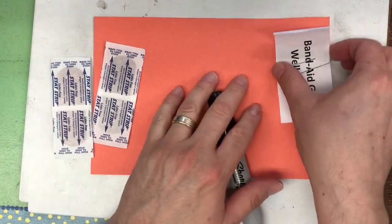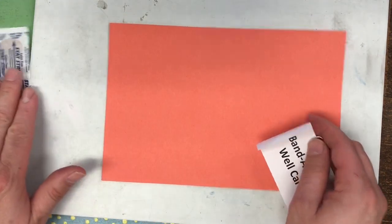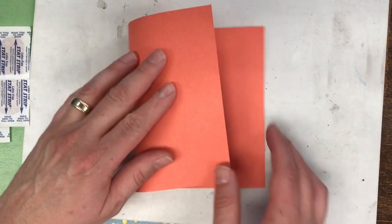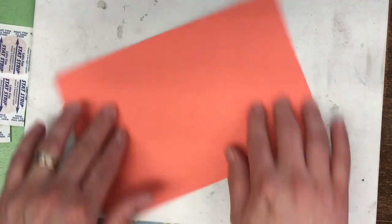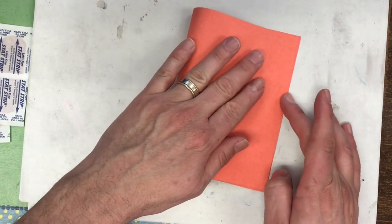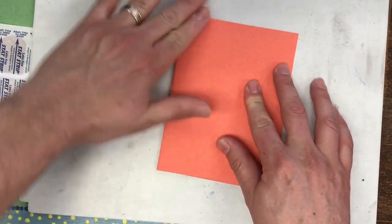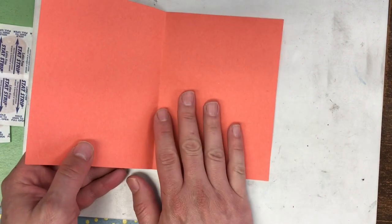First, we're gonna move the pen and the band-aids off to the side. We're gonna fold this to make it into a card. This is hot dog style, this is hamburger, so we're gonna put it hamburger style and fold it. This could be the trickiest part. You want to fold it right down the middle, and this is your cover and this is the inside of your card.